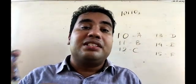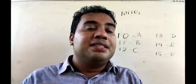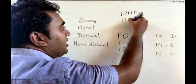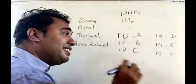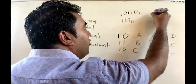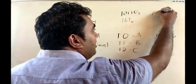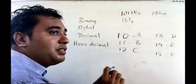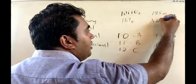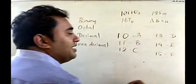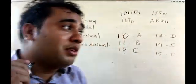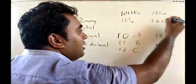If it is an octal number, for example 167, you put 8 as a subscript to state it is written in the octal number system. For a decimal number like 195, you put 10 as the subscript. And for a hexadecimal number like 195, you put 16 as a subscript. So the base of a number system represents the number of digits used in that particular number system.